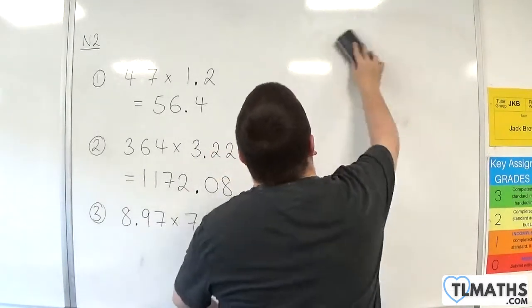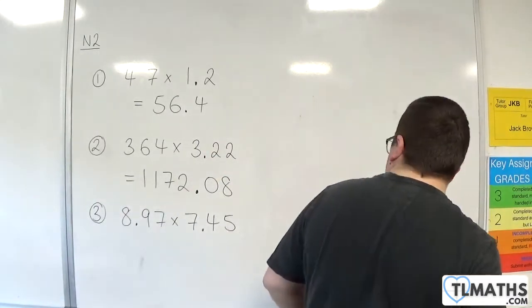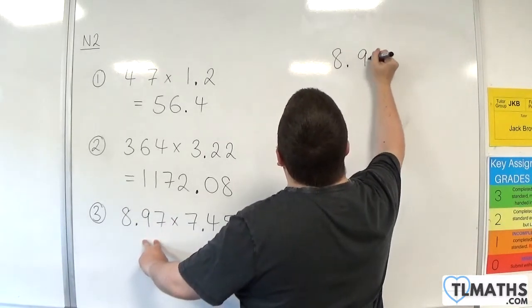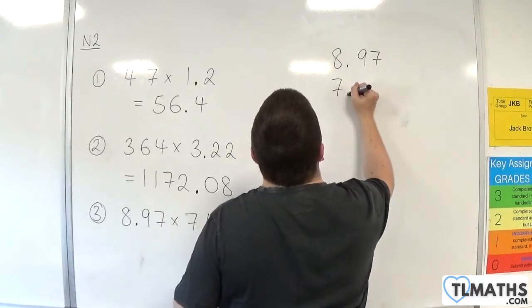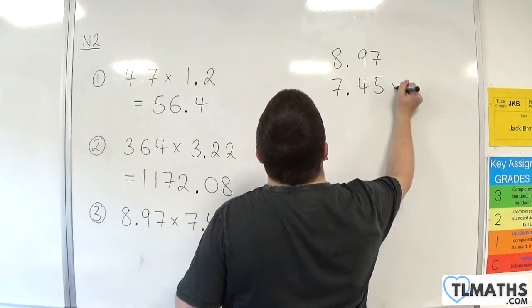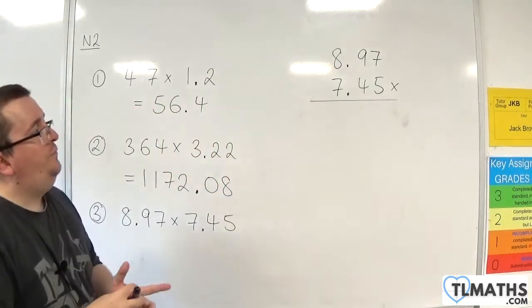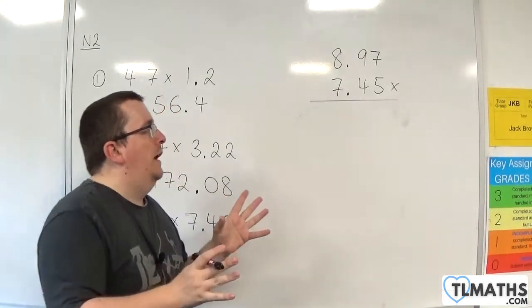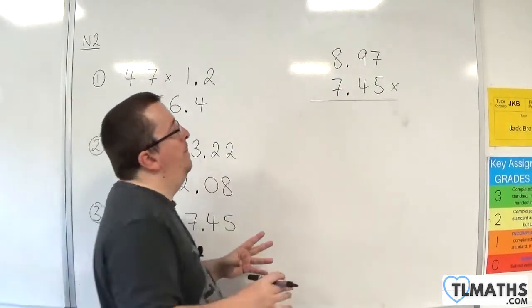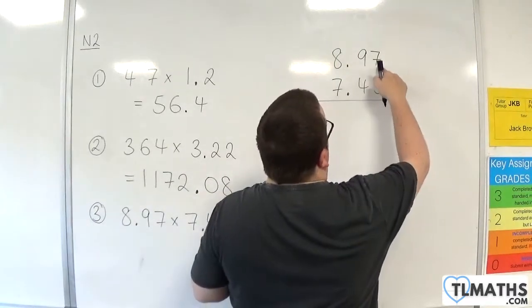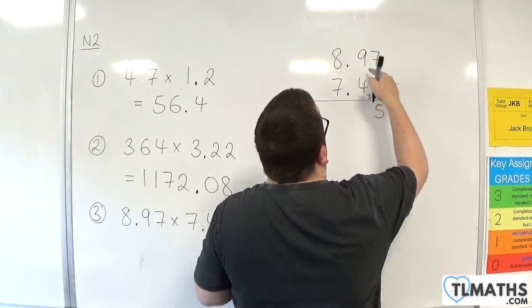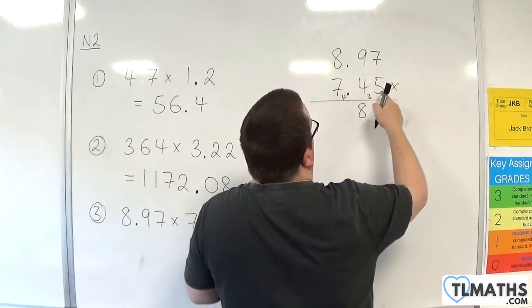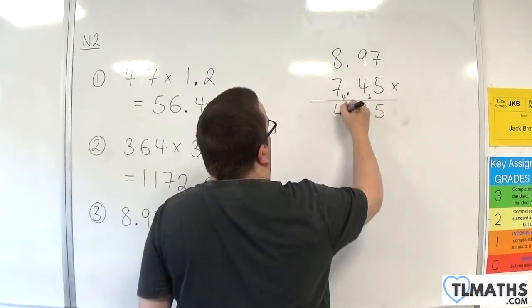Let's take a look at our last example: 8.97 times 7.45. Ignore the decimal places — think of it as 897 times 745. 5 times 7 is 35. Put in the 5, carry the 3. 5 nines are 45, add on the 3 is 48. Put in the 8, carry the 4. 5 eights are 40, add on the 4 is 44.